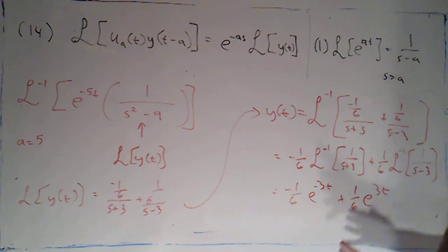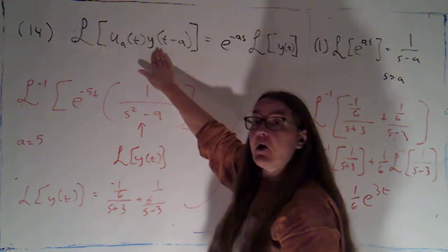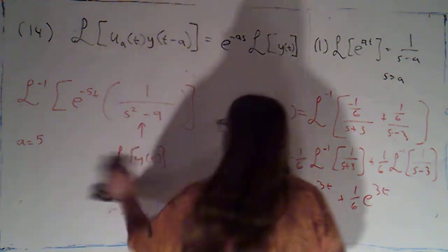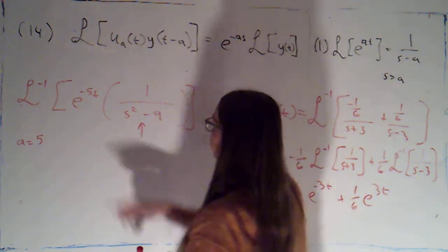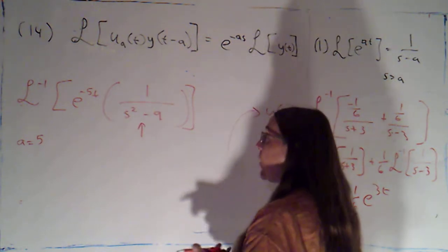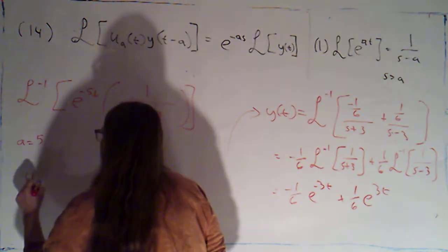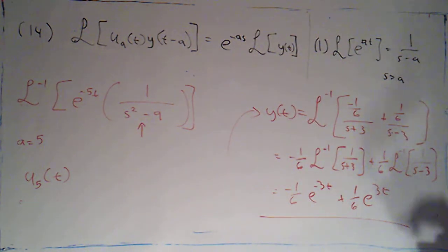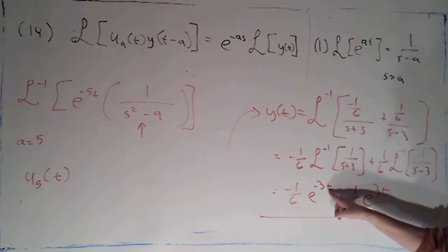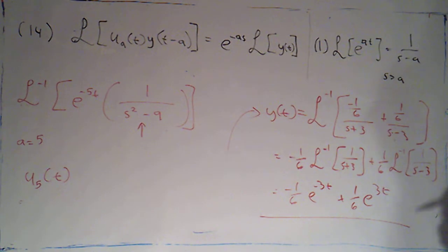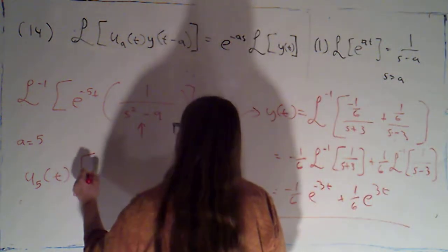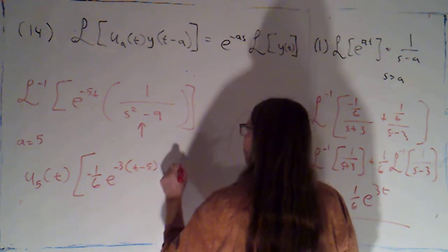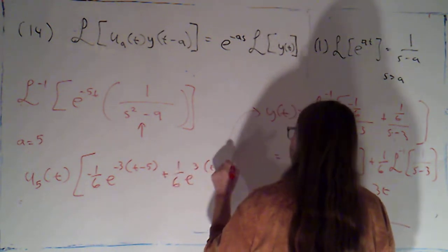Now I've got the two pieces I need for this formula. I needed to know what a was, and I needed to know what function I was turning on and shifting by a distance of a. So the inverse Laplace transform of this whole thing is going to be mu sub 5 of t — that's my on switch — times this function with all the t's replaced by t minus 5 to shift it 5 units to the right. So we get negative 1/6 times e to the negative 3 times (t minus 5), plus 1/6 times e to the 3 times (t minus 5).